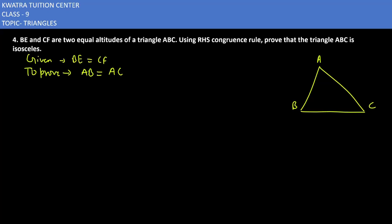BE and CF are altitudes, so this is your BE and this side is your CF.